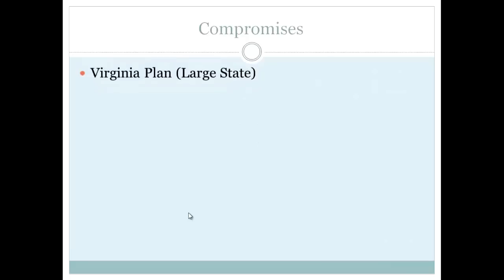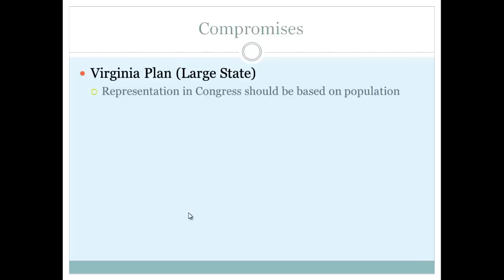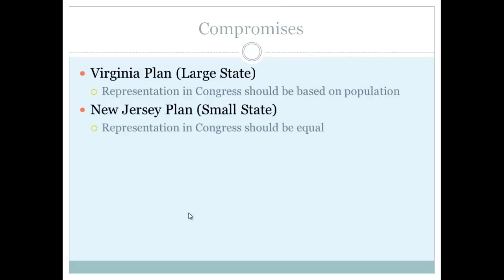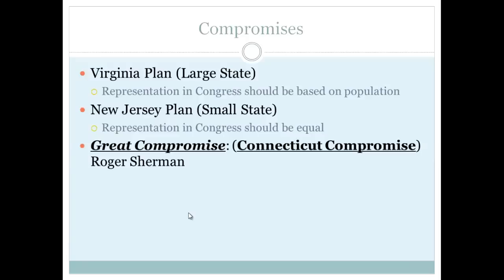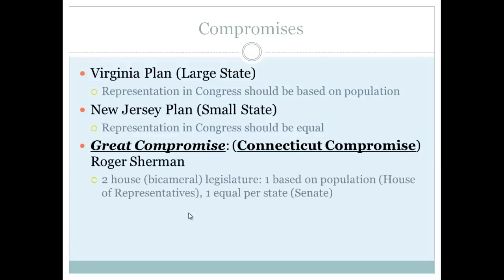There are key compromises you must know by name. The Virginia Plan, also called the Large State Plan, called for congressional representation based on population. Small states opposed this, led by New Jersey, proposing equal representation for all states — the New Jersey Plan. Roger Sherman from Connecticut proposed the Connecticut Compromise, also called the Great Compromise: a bicameral, or two-house, legislature. One house — the House of Representatives — is based on population, and the other — the Senate — gives equal representation per state.